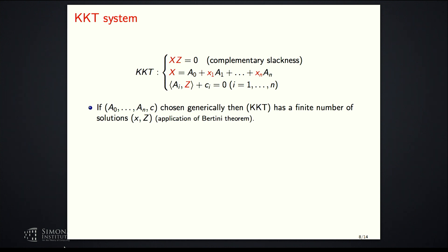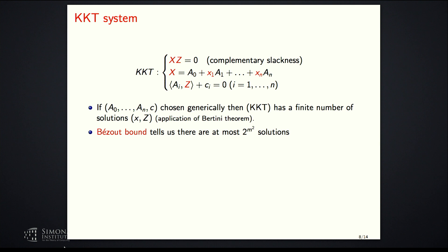Now we can ask how many solutions there are, and this is where we use the Bezout bound: if a polynomial system has finitely many complex solutions, the number of solutions is at most the product of the degrees of the polynomials. For our system, I have M² polynomials of degree two and linear equations. Applying the Bezout bound gives at most 2^(M²) solutions.